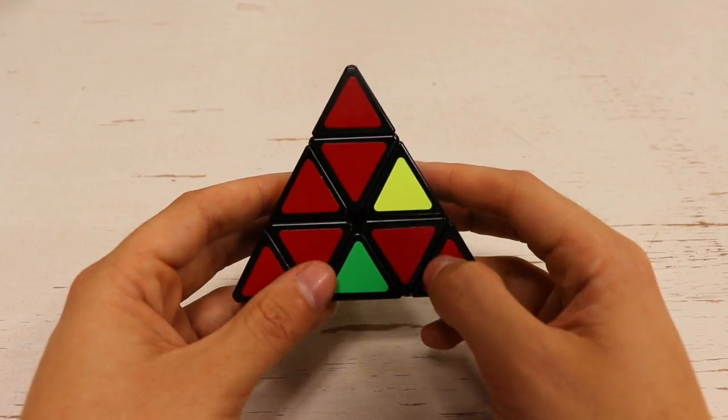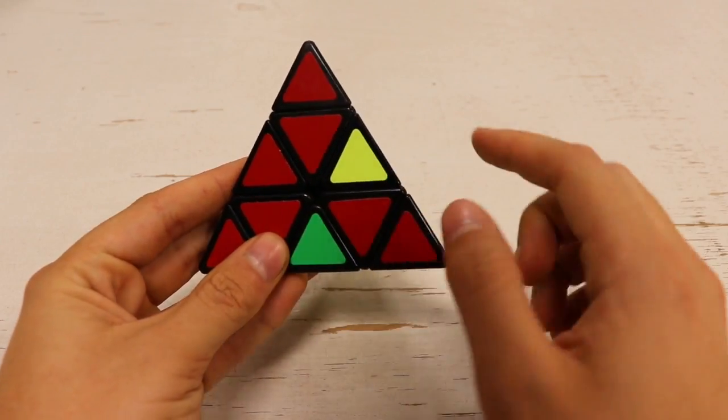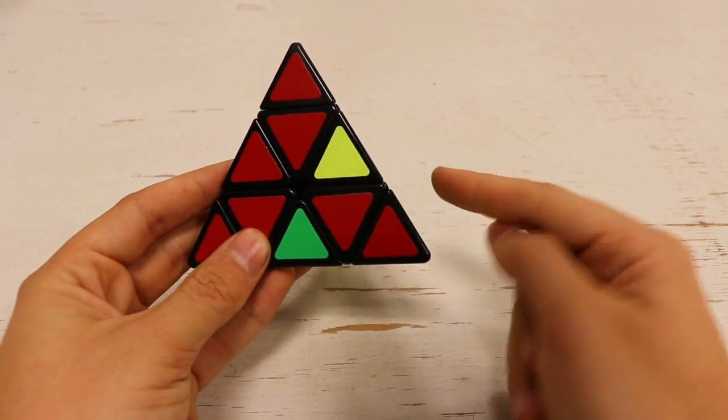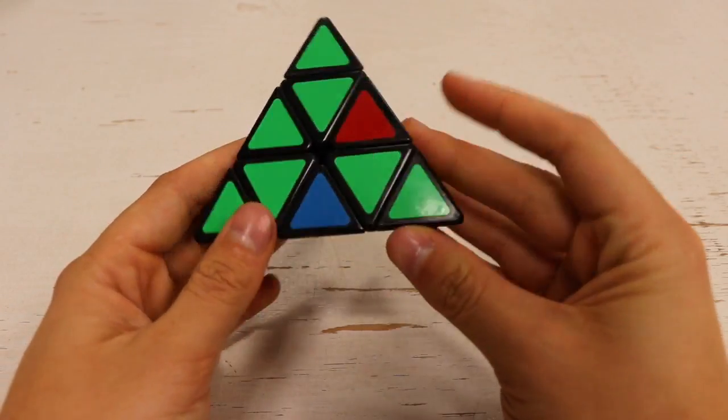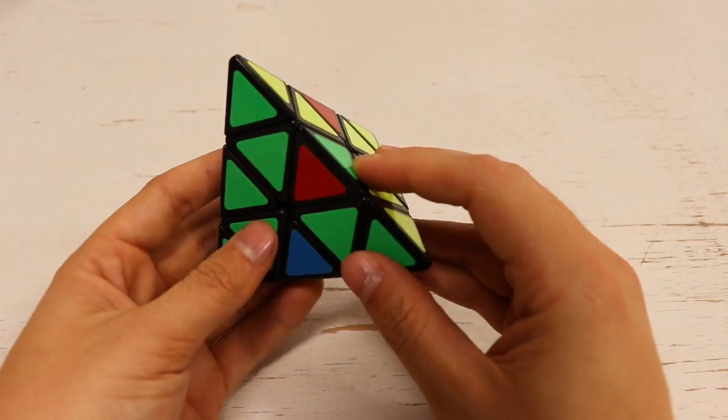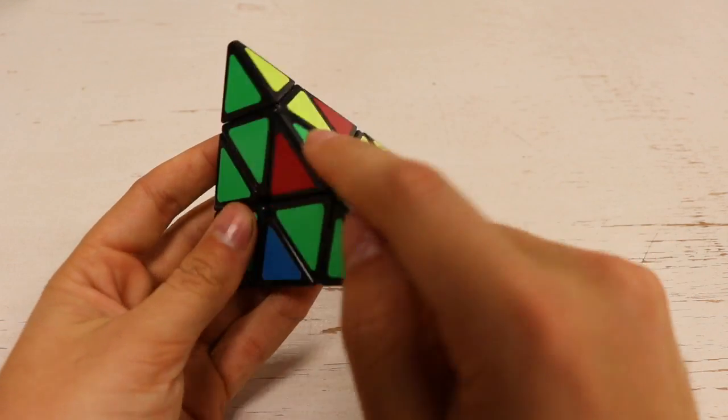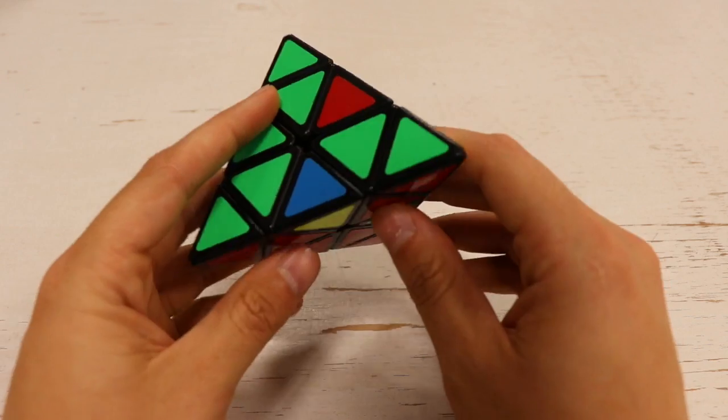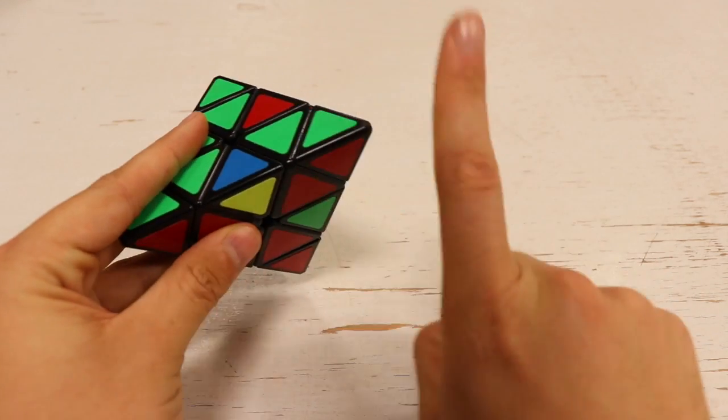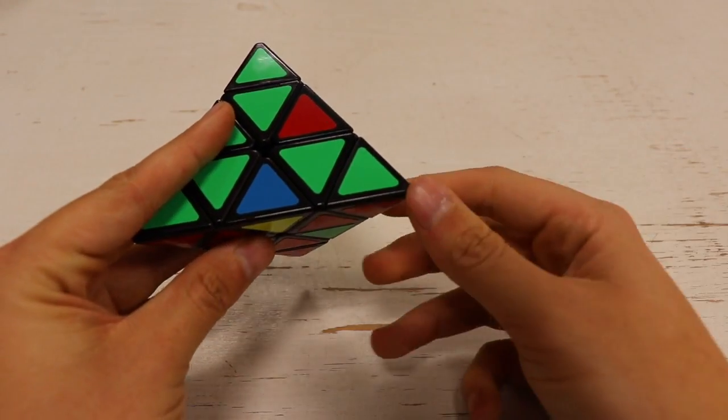So the next step is to put our centers. And this is the one algorithm that you need to know to solve this Pyramix. We'll start, we're in a great space here. We have green on the front, we have red on the bottom. So here's our green and our red piece. And to put this down here, we do the one algorithm that you need to know to solve this cube.